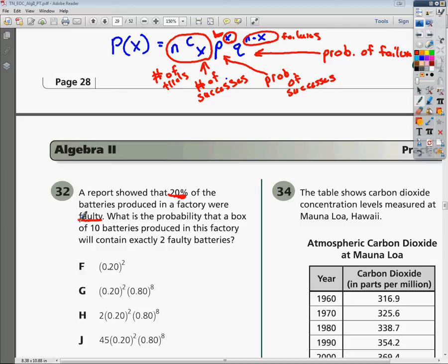Then it says what is the probability that a box of 10 batteries. So how many total batteries do we have? We have 10 total batteries. So if you try to plug this into your formula, the number of trials that you have are going to be 10 because you have 10 total batteries. And then you have the C. And then x is the number of successes. Well, the number of successes is how many faulty batteries that we have. We want to know that we have two faulty batteries. So it's going to be 10 choose 2.